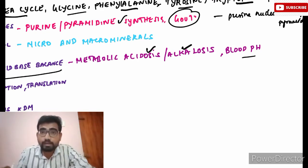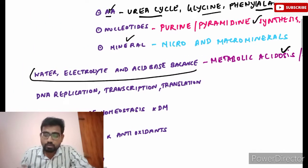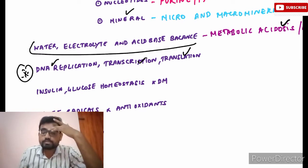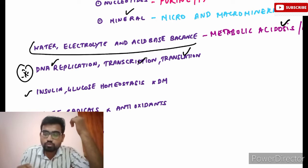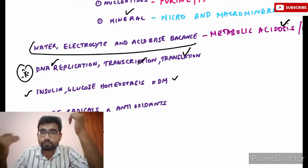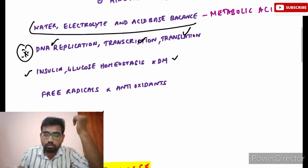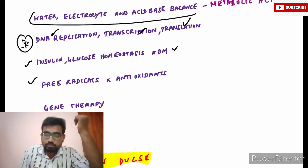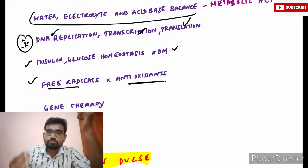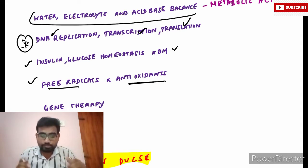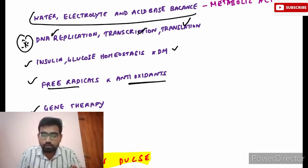Next, cover water, electrolytes, and acid-base balance — know about metabolic acidosis and metabolic alkalosis, as case-scenario questions may come from this, and how to maintain blood pH. Also very important: DNA replication, transcription, and translation. Then cover insulin and glucose homeostasis and diabetes mellitus — the functions of insulin and its effects on glucose. Finally, read about free radicals and antioxidants, gene therapy, and xenobiotics and detoxification.